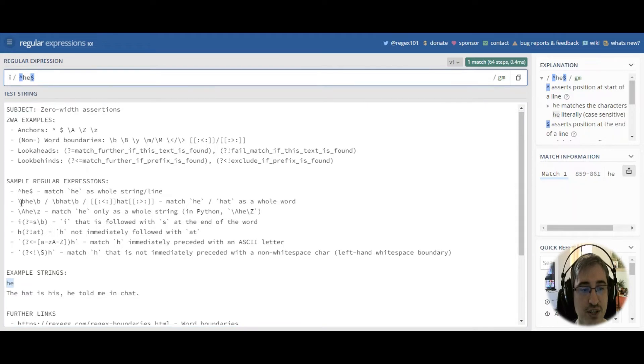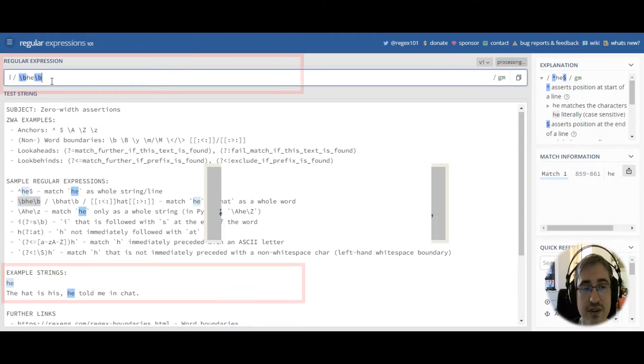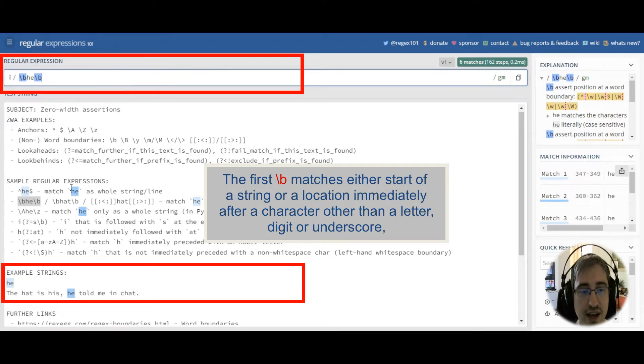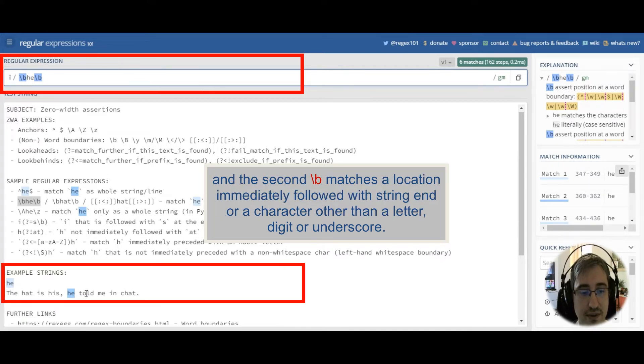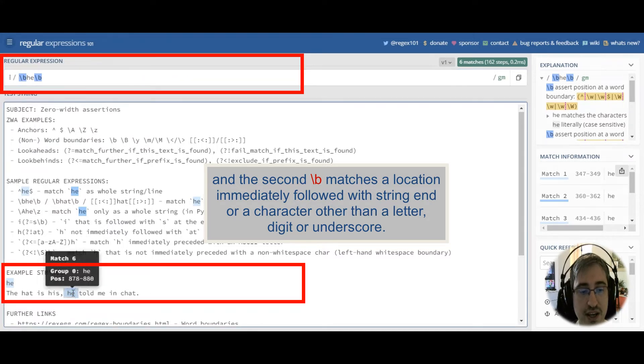If we want to match he as a whole word, we usually use word boundaries. And we match any he occurrence that is neither preceded nor followed with a word character. Look, we've got a match in he, but we don't have any match in the word the.